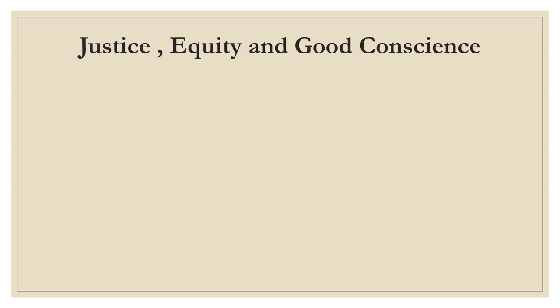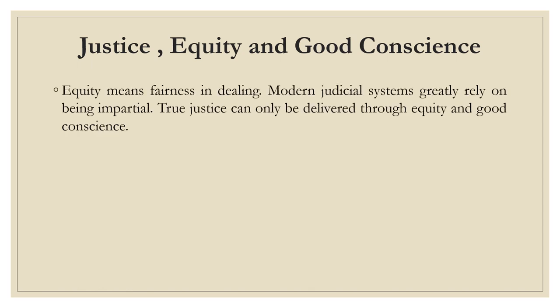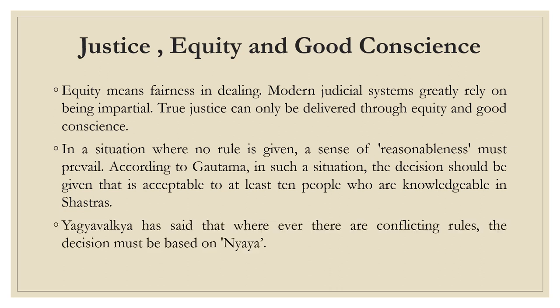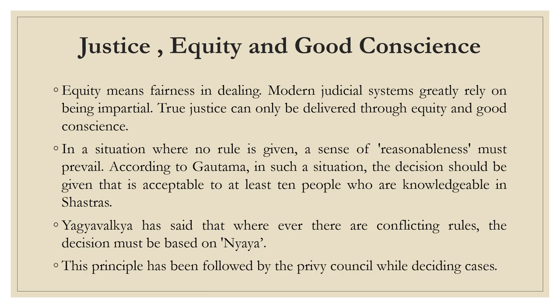The first modern source is justice, equity and good conscience. Equity means fairness in dealing. Modern judicial system greatly relies on being impartial. True justice can only be delivered through equity and good conscience. In a situation where no rule is given, a sense of reasonableness must prevail. According to Gautam, the decision should be given that is acceptable to at least 10 people who are knowledgeable in Shastra. Yajnavalkya has said that wherever there are conflicting rules, the decision must be based on Naya. This principle has been followed by the Privy Council while deciding cases, and the modern sources say that the decision must be on the basis of justice, equity and good conscience.